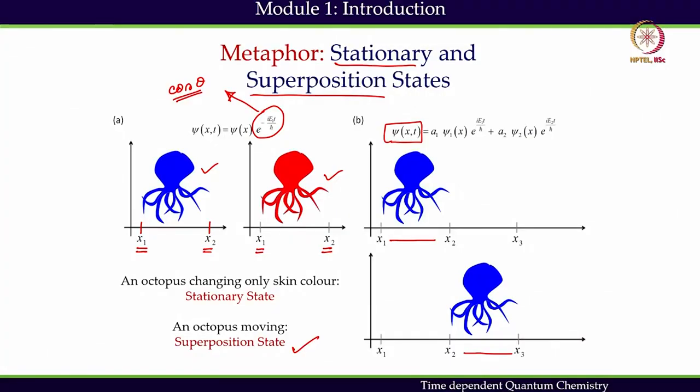The phase is a very important factor. As an example, we often express the p orbital as positive and negative lobes.